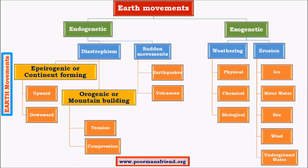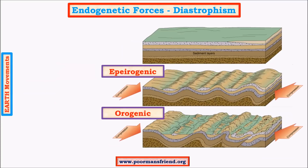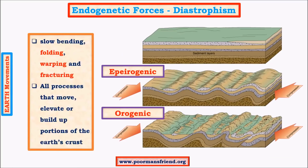Let us now look in detail at earth movements. Under endogenetic movements we'll study diastrophism and sudden movements. Diastrophism consists of slow bending, folding, warping, and fracturing of the earth's surface — these are the basic terms for our study of geomorphology.